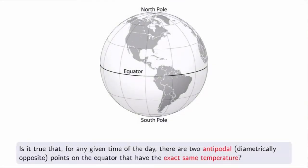Let me end this video with a cool question. Here's the earth — suppose you're interested in the temperature distribution over the equator. Is it true that for any given time of day — today, tomorrow, 100 years from now — there are two antipodal points (points diametrically opposite on the equator) that have the exact same temperature? So right now, there must be two such points somewhere on opposite sides of the equator at the exact same temperature. That sounds totally crazy — we'll see soon!